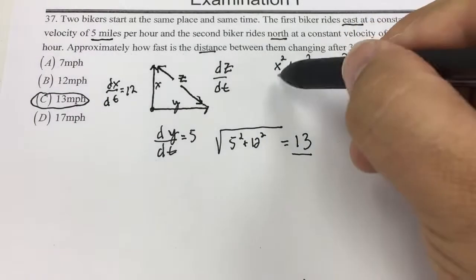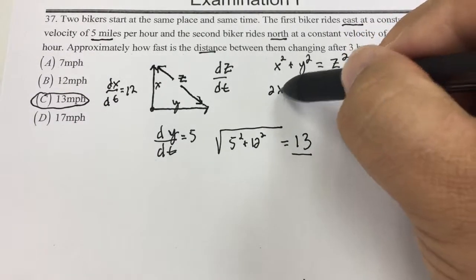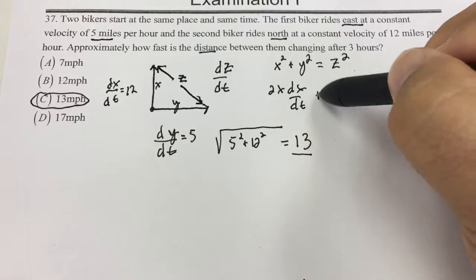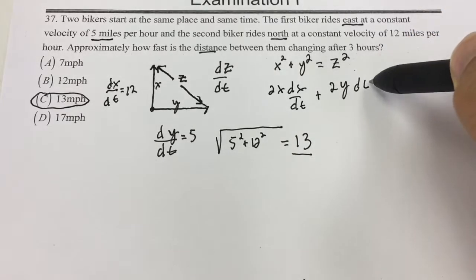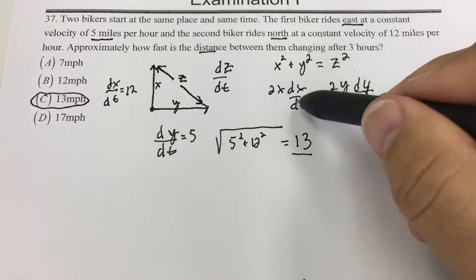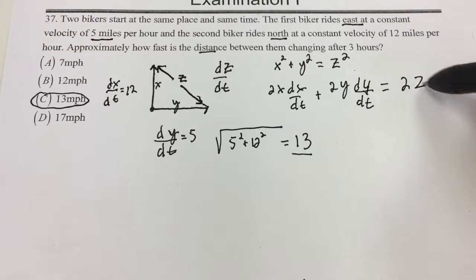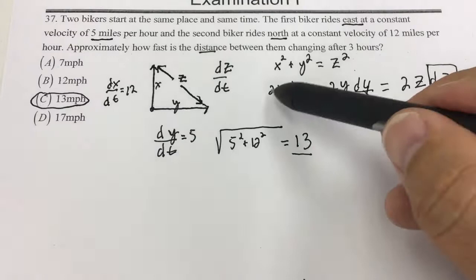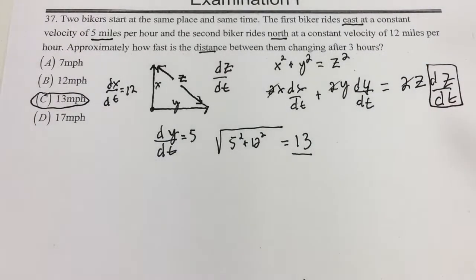I differentiate everything — nothing's constant, the entire triangle is growing — so 2x dx/dt plus 2y dy/dt equals 2z dz/dt. And that's what I'm looking for, dz/dt. I can divide everything out by 2 and eliminate the 2's.